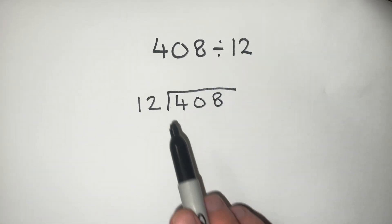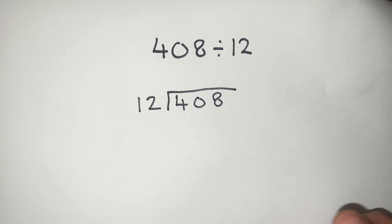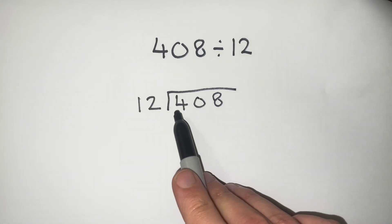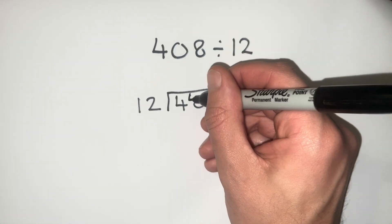So the first thing to do would be see how many 12s we can get into 4, but of course we can't get any 12s into 4. So we're going to carry all of that 4 over to this 0 to make 40.